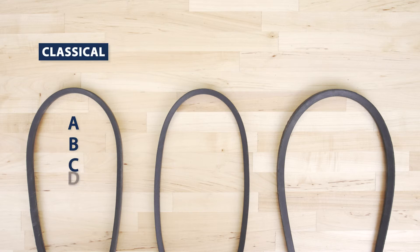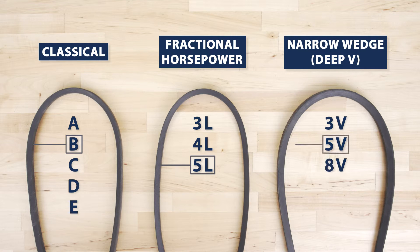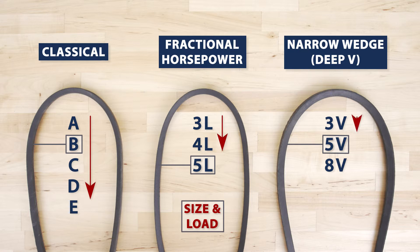The most common types are the classical V-belts, fractional horsepower belts, and narrow or deep wedge belts. Each type uses a different belt code to describe the length and size, and each size is rated for different loads, so overall it's important to find an exact match.